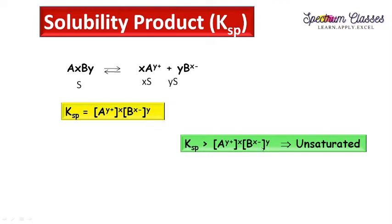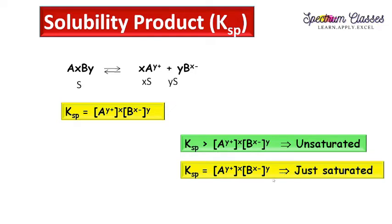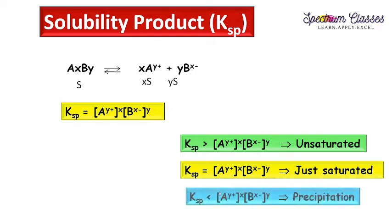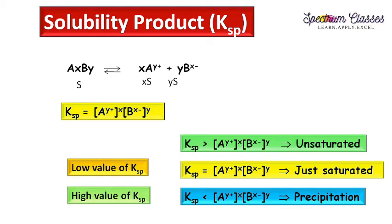This solubility product is important to determine whether precipitation will form or not. If Ksp is greater than the ionic product concentration, the solution is unsaturated. If it is equal to the ionic product, it is just saturated. If the value of Ksp is less than the ionic product, we get a precipitate. For low or high values of Ksp, the ionic concentration is the determining factor for precipitation.